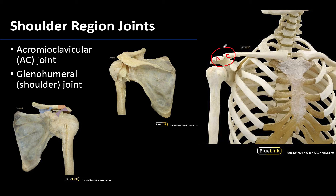The AC joint is not a particularly mobile joint, but its slight movements are important in allowing the full range of motion at the most mobile joint of the body, which is the glenohumeral or shoulder joint — and you've got to love that shoulder joint for many reasons.